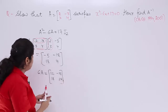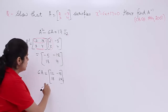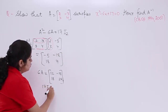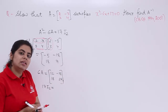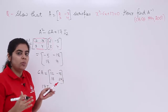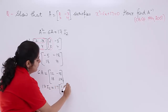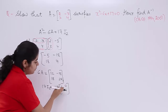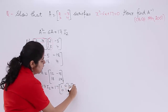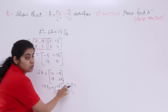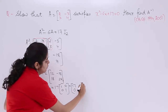Now compute 17I₂: that is 17 multiplied by the identity matrix [1, 0; 0, 1], giving [17, 0; 0, 17].